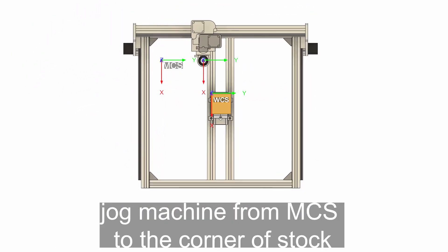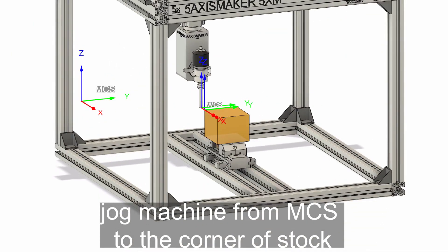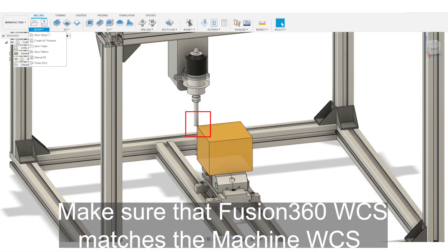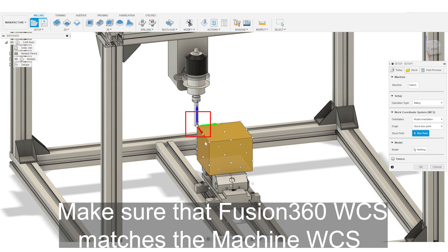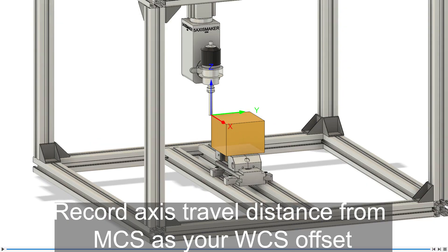We're jogging our machine from our machine coordinate system to the corner of our stock. Let's make sure that the Fusion 360 setup work coordinate system matches the machine's work coordinate system. Now record the distance traveled from your machine coordinate system as your work coordinate system offset.